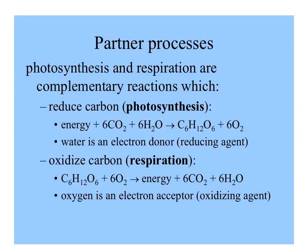Photosynthesis reduces carbon: six carbon dioxide molecules and six water molecules combine with energy from the sun to form sugars and oxygen. Oxygen is evolved from photosynthesis for use by plants as well as other organisms in respiration. In that process, sugar molecules combine with oxygen to release energy, carbon dioxide, and water. So in photosynthesis water is a reducing agent donating electrons, and in respiration oxygen is the oxidizing agent accepting electrons.